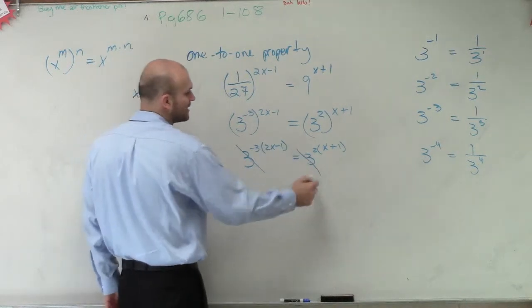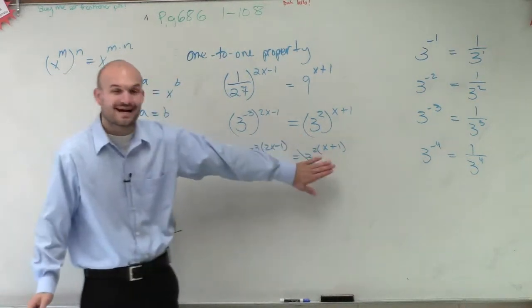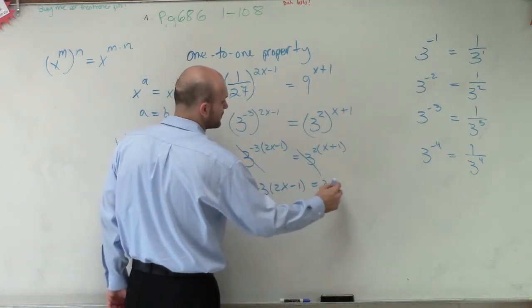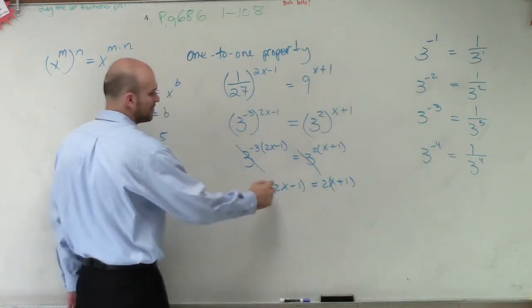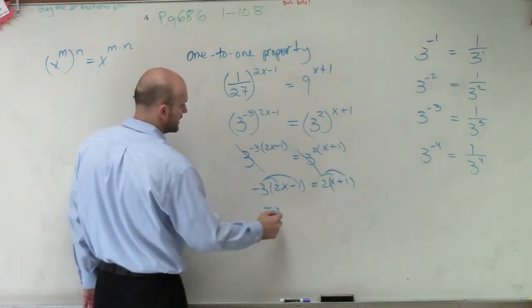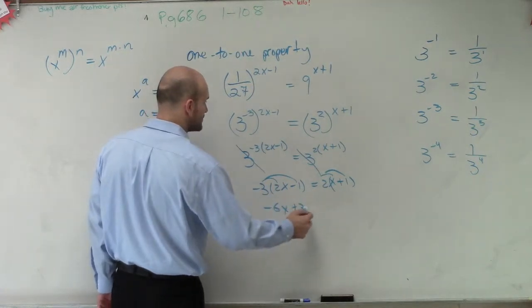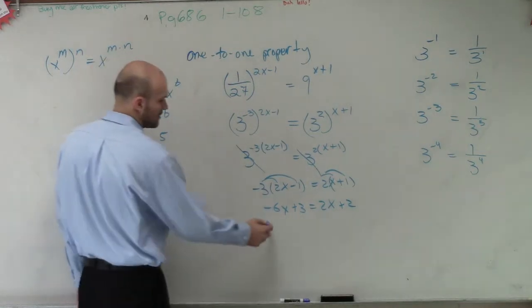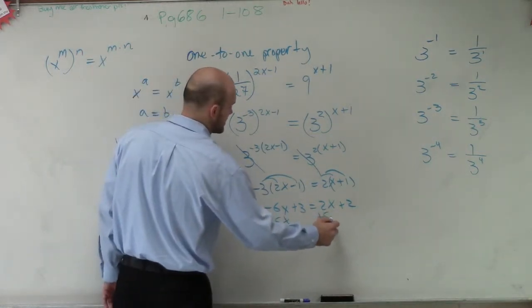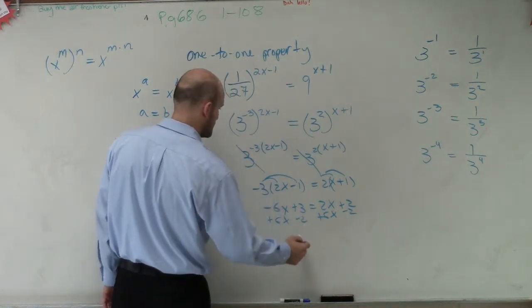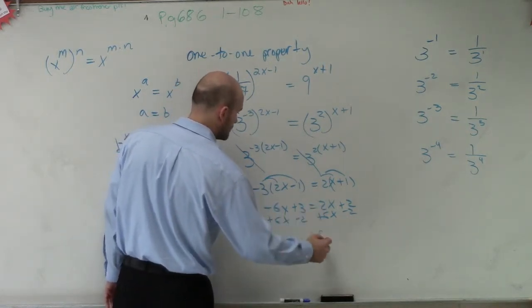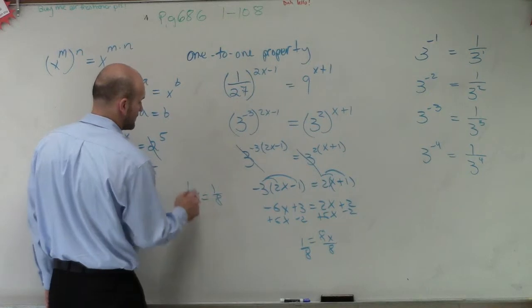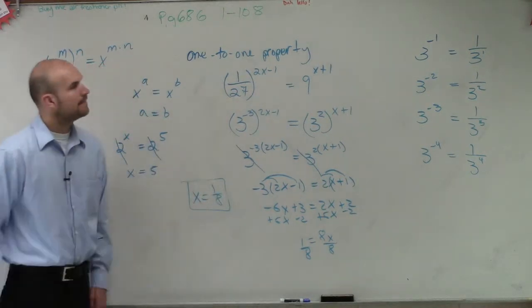Now my bases, we're not going to care about our bases because our bases are exactly the same. And now I have an equation that looks something like this, which we can solve for, right? Now we can solve for x. So I apply distributed property. So I get -6x + 3 equals 2x + 2. I'll add 6x. Subtract 2. Subtract 2. So I get 1 equals 8x. Divide by 8. Divide by 8. And x equals 1/8.